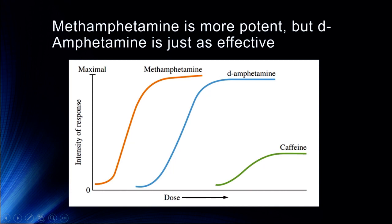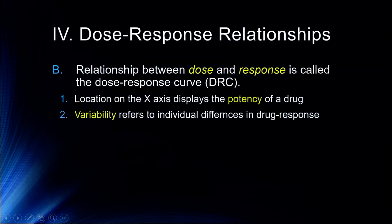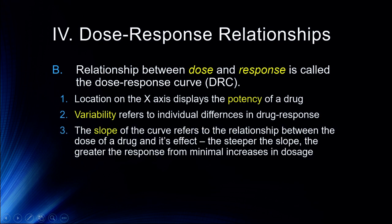The further along this x-axis, the less potent we are. This is a great comparison of methamphetamine, dextroamphetamine, and caffeine. Dextroamphetamine and methamphetamine have fairly similar properties — they have pretty similar slopes and the same maximal effect. The difference is that it requires far less methamphetamine than dextroamphetamine to provide the same kind of response. Caffeine requires much higher dosage and will never mimic the high response of methamphetamine or dextroamphetamine. That variability refers to individual differences in drug response.